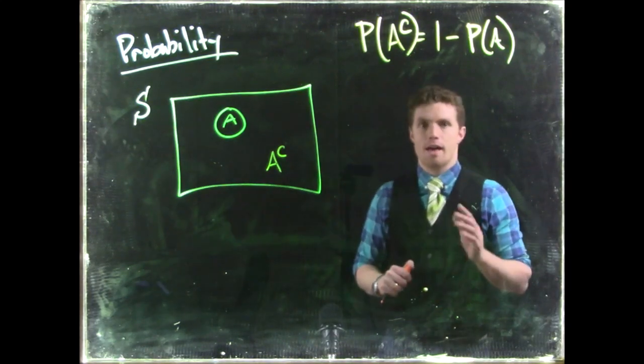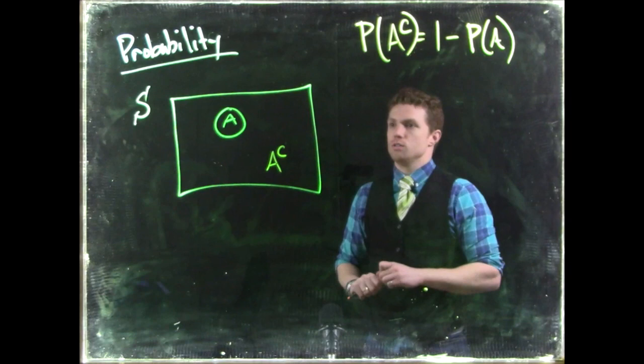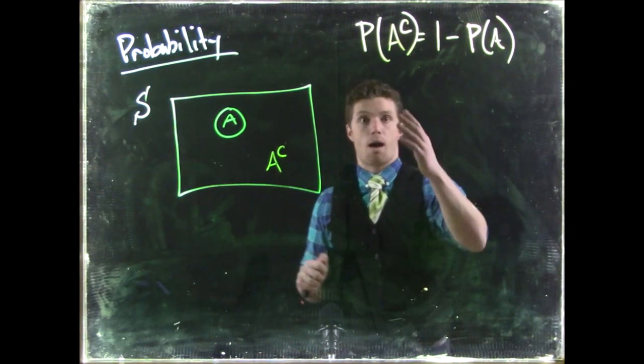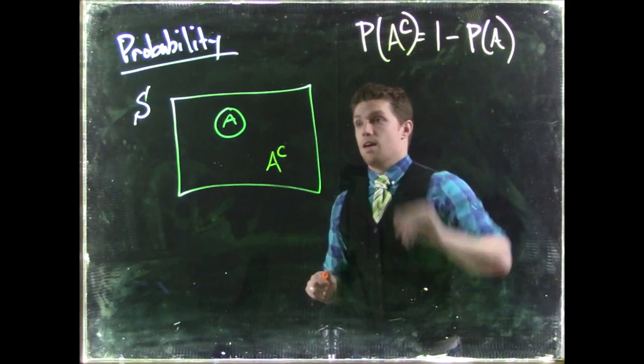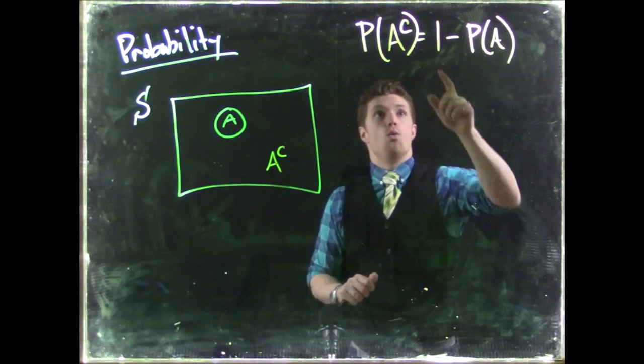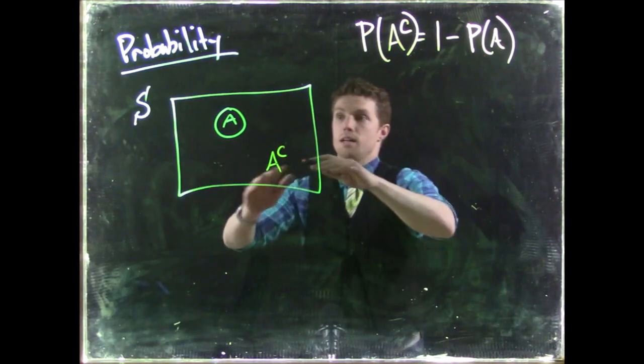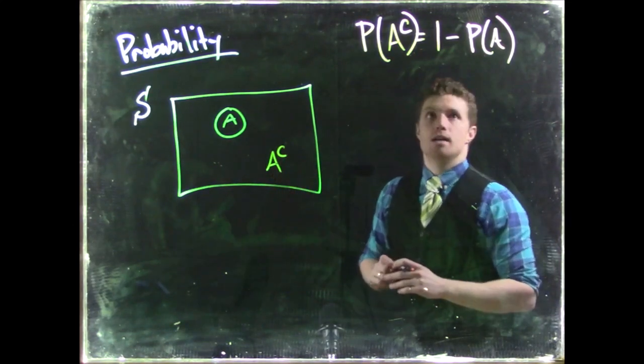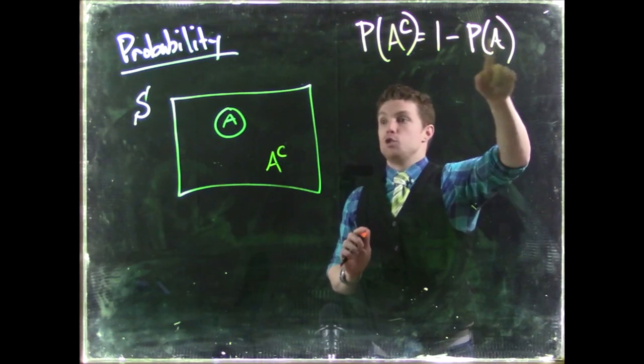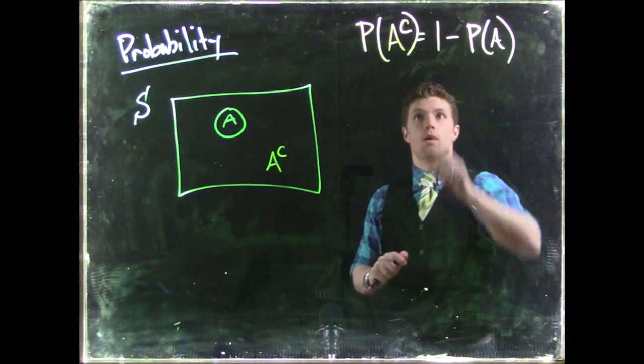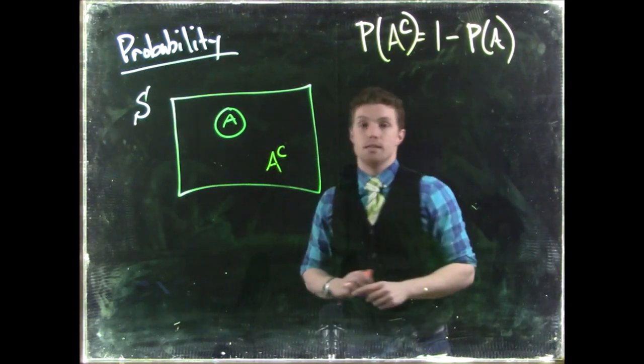This one is going to be very helpful when we're trying to determine some of our probabilities. The probability of the complement of A is equal to one minus the probability of A. One being the 100% probability of an event happening. A is the specific event A happening. And so one minus A is equal to the complement of A.